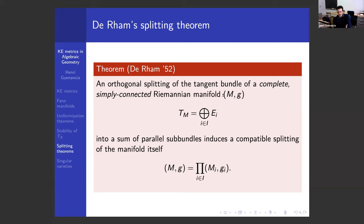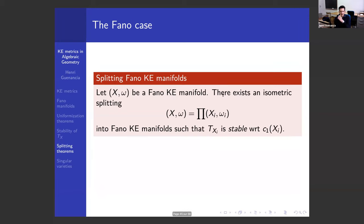Let me spell out a few consequences of this theorem combined with the Yau theorem. Starting with the Fano case: I start from a Fano manifold X and assume it admits a Kähler-Einstein metric. Some Fano manifolds do admit a KE metric, some don't, and it's not easy in general to know without additional assumptions. My statement is: given a Kähler-Einstein metric on my Fano manifold, what can I do with it?